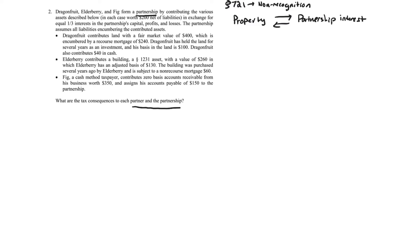This problem brings unique issues mainly dealing with liabilities. Each partner contributes property but also contributes some type of liability that the partnership takes on. The question is: do we view the liability issues together with the formation, or separately? We know there's no gain or loss when property is transferred for a partnership interest — but how do the liabilities affect things?